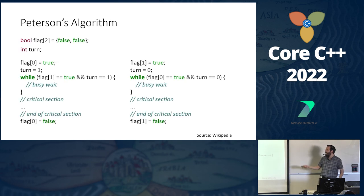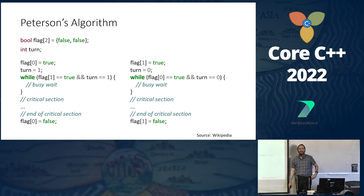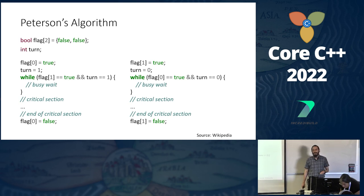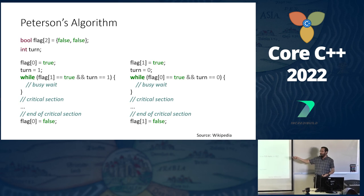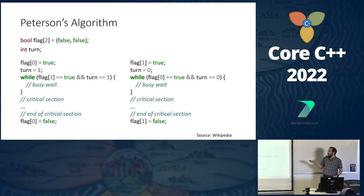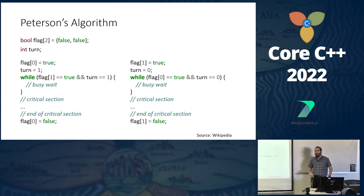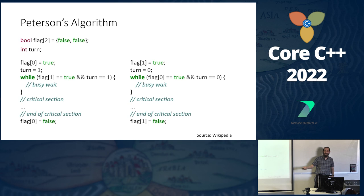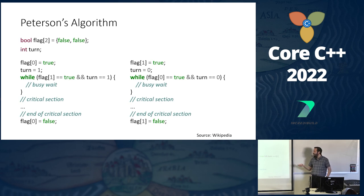Short course on Peterson's lock: we have three shared variables — two flags, one per thread, indicating 'I want to enter the critical section,' and a turn variable indicating whose turn it is. When a thread wants to enter, it raises its flag and politely says 'you go first.' This 'you go first' makes all the magic work. Then I check: do you want to enter? If not, I enter freely. If you do, I check whose turn it is.